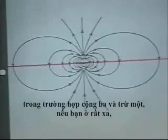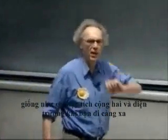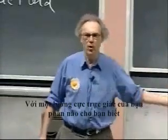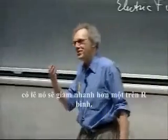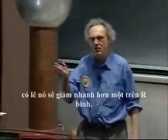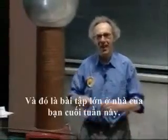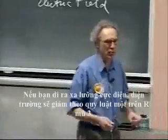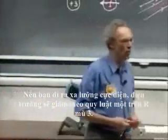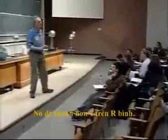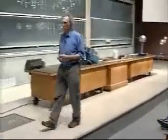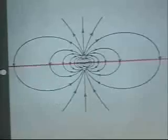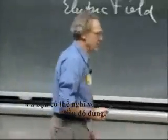In the case of plus three and minus one, if you're very far away it's like having a plus two charge, and the E field will fall off as one over r squared. With a dipole, your intuition tells you it will probably fall off faster than one over r squared. And that is part of a homework assignment. In fact, I can already give you the answer — you have to prove it. If you're far away from an electric dipole, the electric field falls off faster than one over r squared. There is not a single point in space where the electric field is zero.